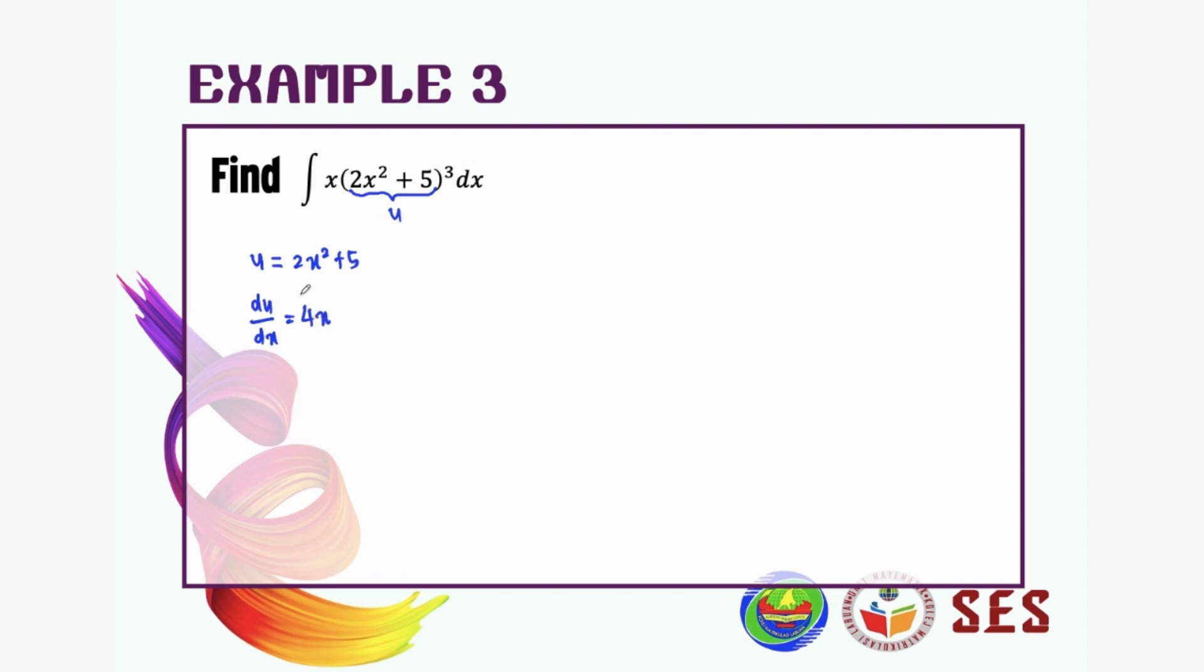Okay, so we already know this is our u. What's left is x dx. So we can rearrange this one. We bring the x to the other side: du equal to 4x dx.